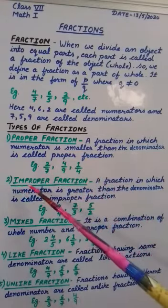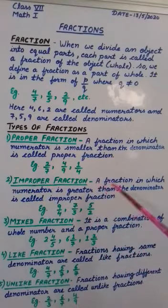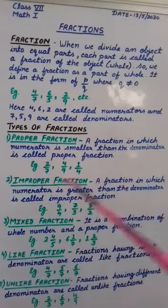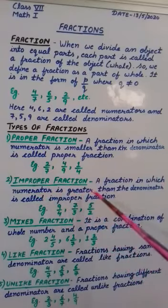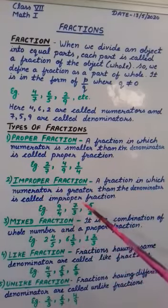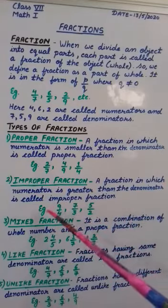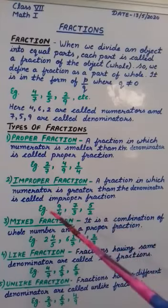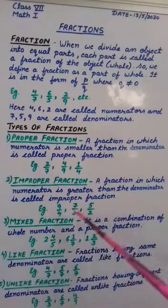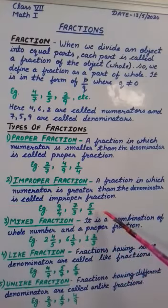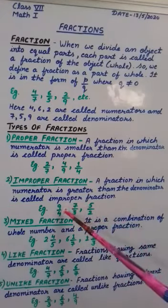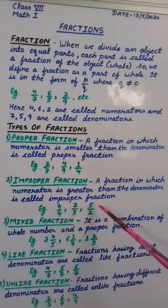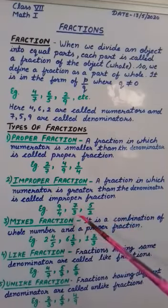Number 2: it is improper fraction. A fraction in which the numerator is greater than the denominator is called an improper fraction. See some examples here: 9 by 4, 7 by 3, 5 by 2. These all are examples of improper fractions. Here we can see that the numerator is greater than the denominator.